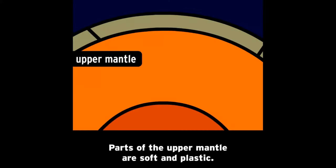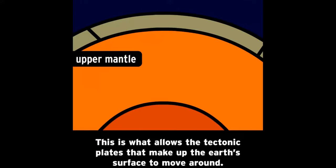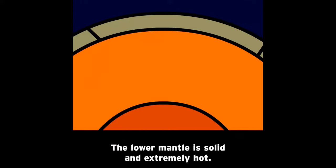Parts of the upper mantle are soft and plastic. This is what allows the tectonic plates that make up the Earth's surface to move around. The lower mantle is solid and extremely hot.